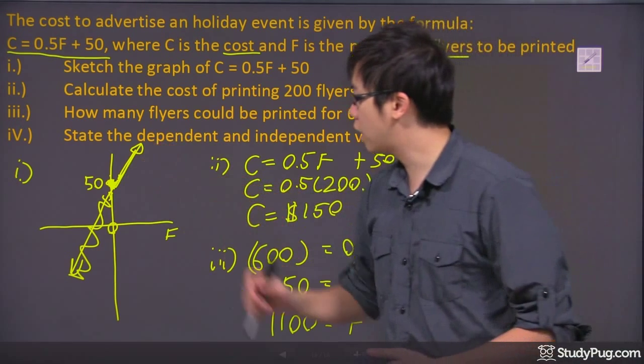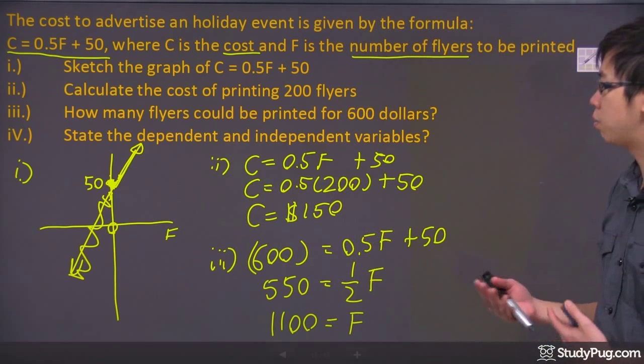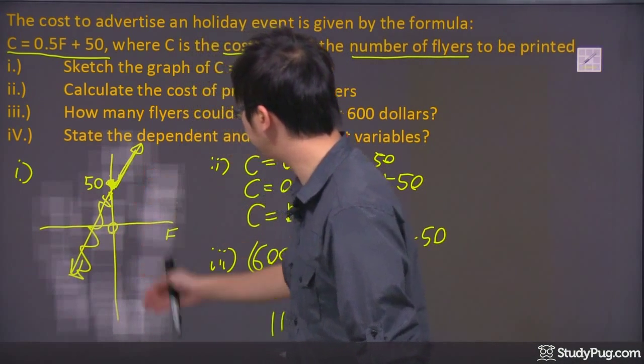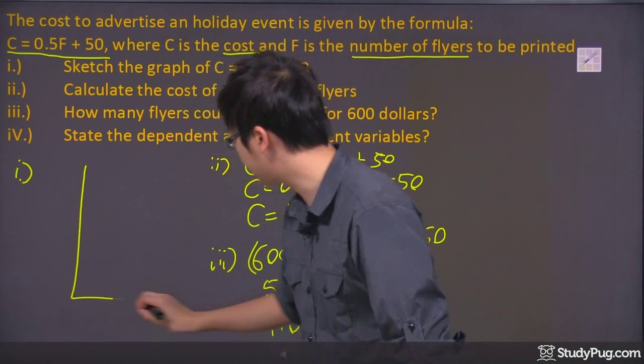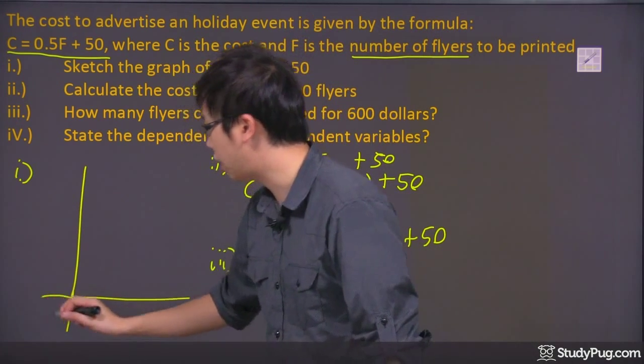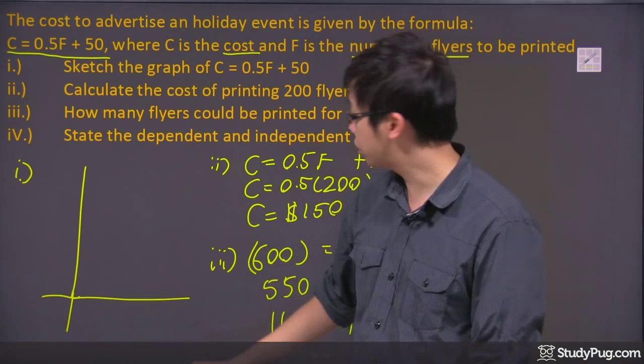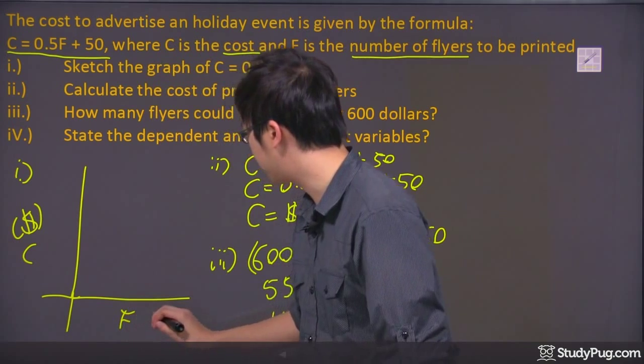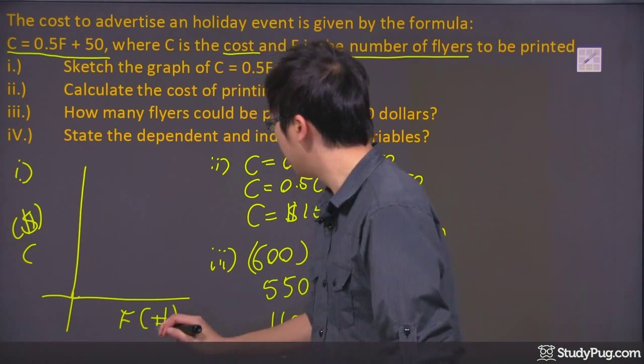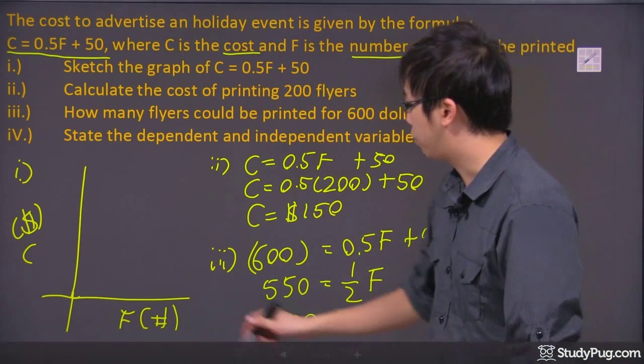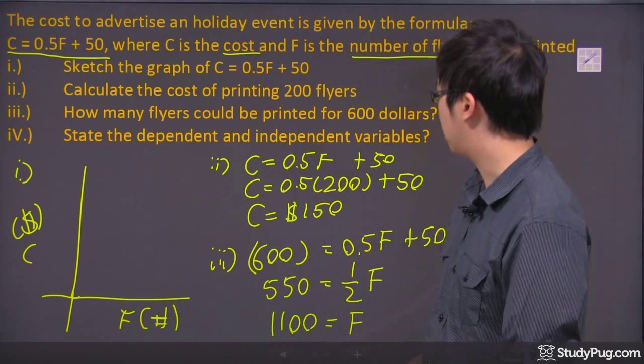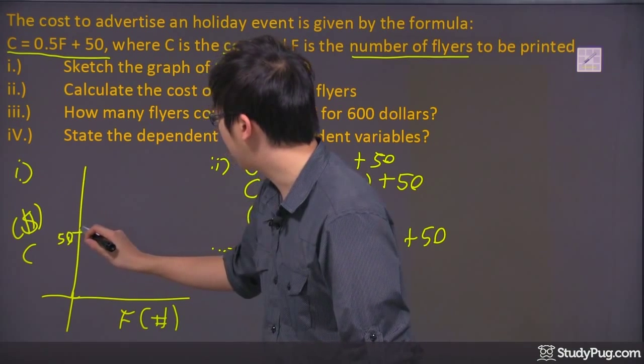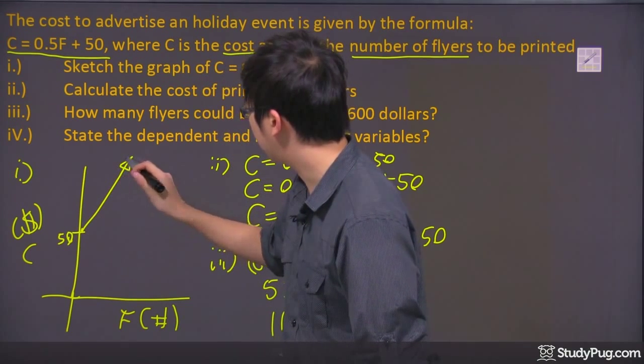Now, the very last question right here is to state the dependent and the independent variables. So if I could just kind of redraw this right here for you. Technically, it looks something like this. Because we don't have any negative flyers or negative dollars here. So this is the cost, which is the money. And this is the flyer, which is the number of flyers, right? So you're going to write all those names down. So what that means is there's a 50 right here. And you're going up 1 over 2, up 1 over 2. So the graph looks something like this.